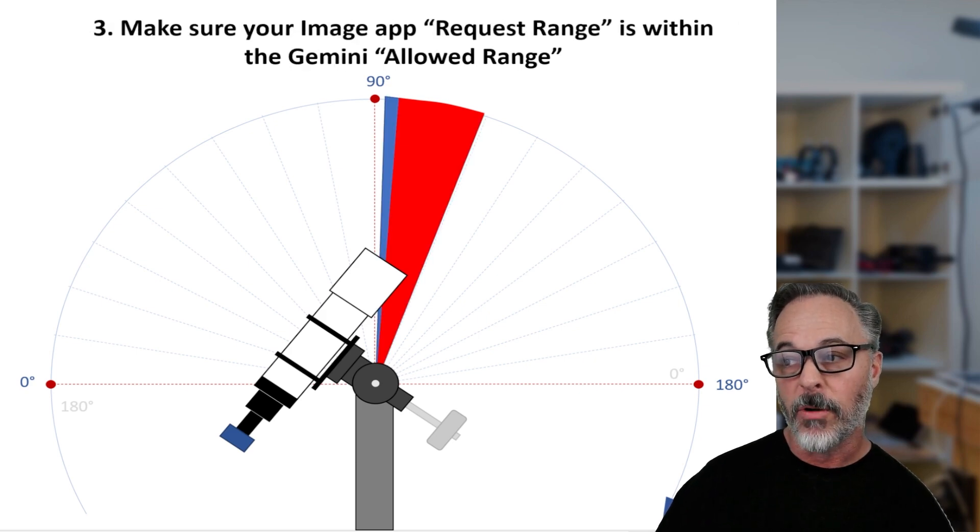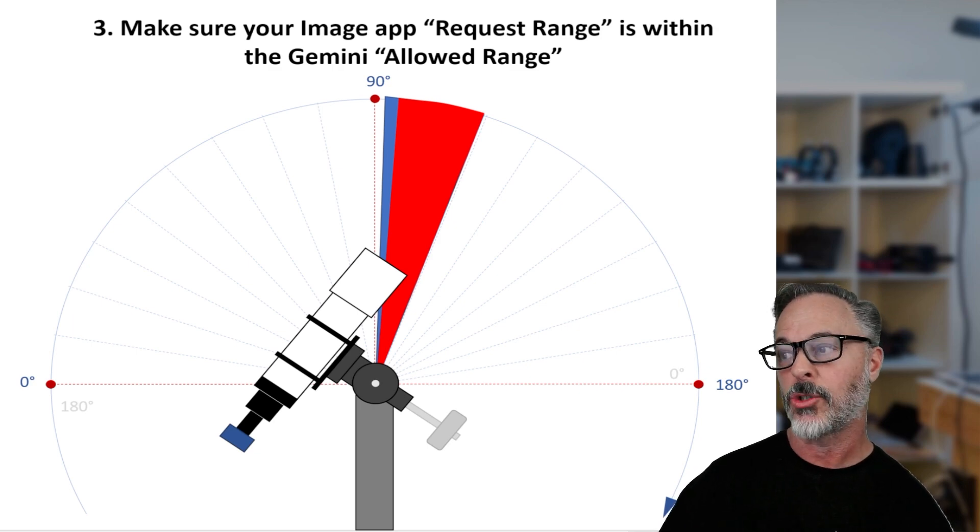The last important piece is we need to make sure, and this is our coordination, that the imaging app request range is well within the Gemini allowed range. And then we add a little bit of padding because there's always a little bit of inaccuracy in terms of what the camera is doing, what the telescope is doing.